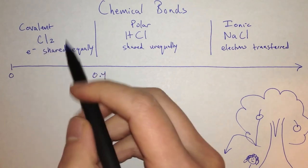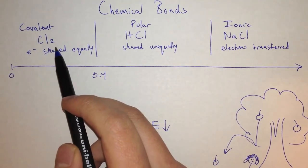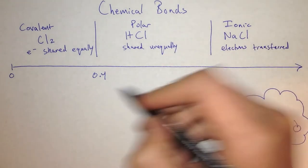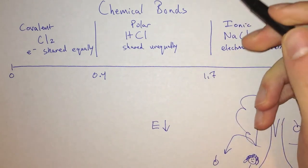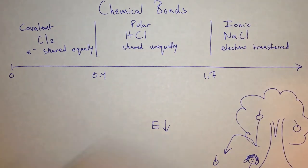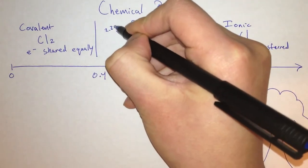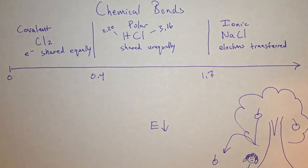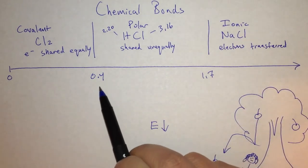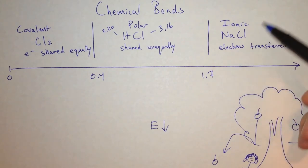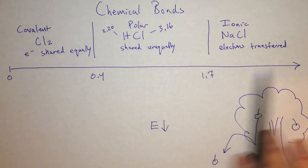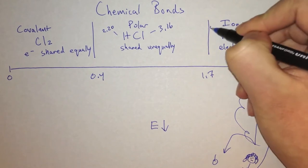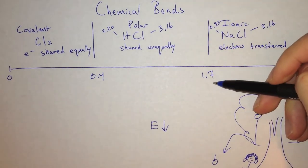In our case, chlorine's electronegativity is 3.16 and it's bonded to itself, so the difference is 0. A polar covalent compound is between 0.4 and 1.7. For example, hydrogen's electronegativity is 2.20 and chlorine's is 3.16, so the difference is about 1, which is between 0.4 and 1.7. In an ionic bond, the difference is greater than 1.7. In our case, chlorine is 3.16 and sodium is 0.93, which is definitely greater than 1.7.